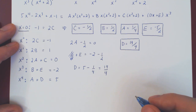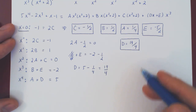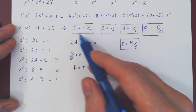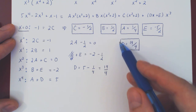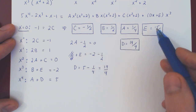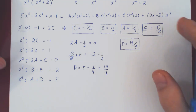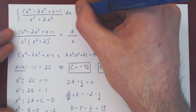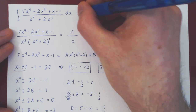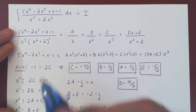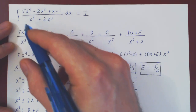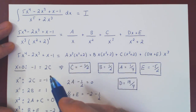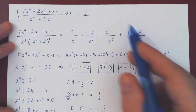We now have all five coefficients: a equals one quarter, b equals one half, c equals negative one half, d equals 19 quarters, and e equals negative five halves. We can now go back and find the integral. If we call the original integral I, instead of integrating the initial rational function directly, we will integrate its partial fraction decomposition.